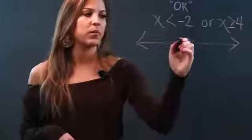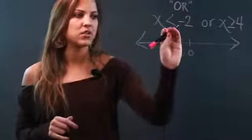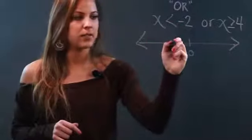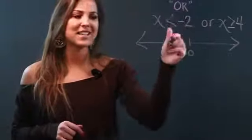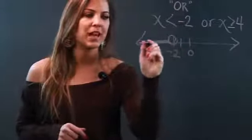We're going to go to negative 2, and since there's no line underneath the inequality, that means we have an open circle on negative 2. Now I'm looking for all the numbers that are less than negative 2, which are going to be to the left, so I'm shading those.